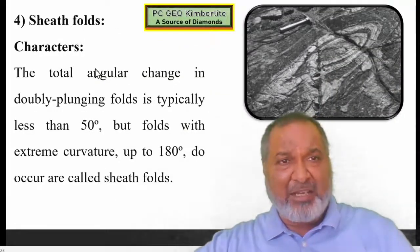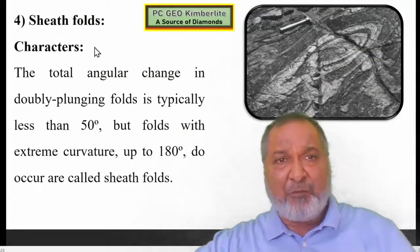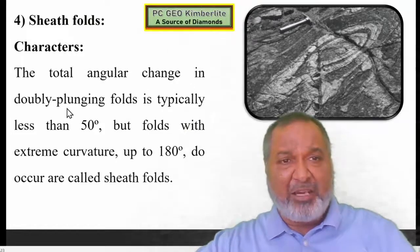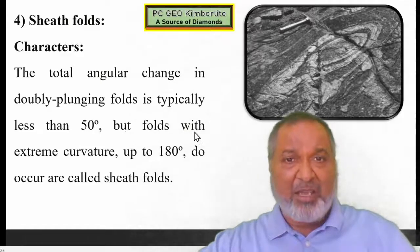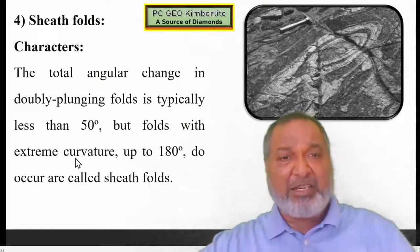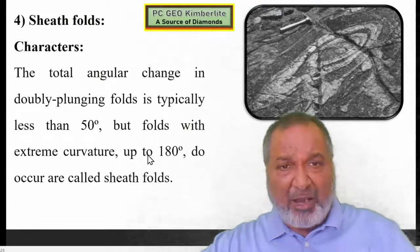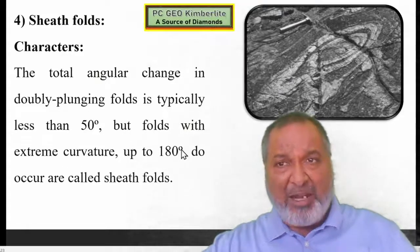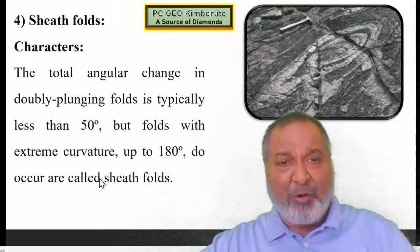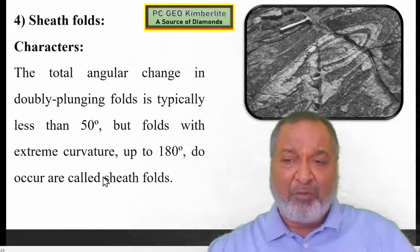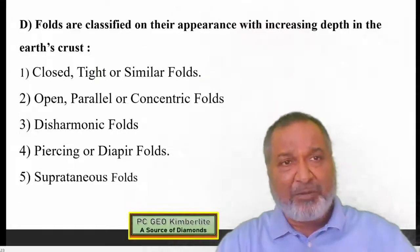The last category in this set is sheet folds. The total angular change in the doubly plunging fold is typically less than 50 degrees. But folds with extreme curvature up to 180 degrees do occur and are called sheet folds.